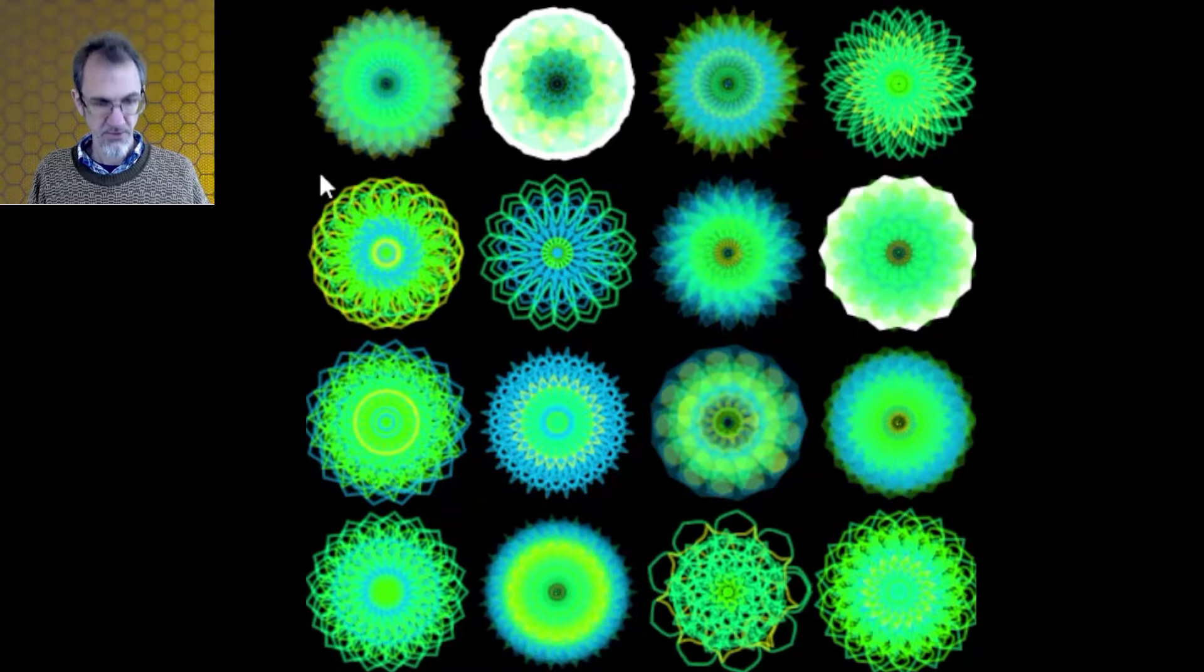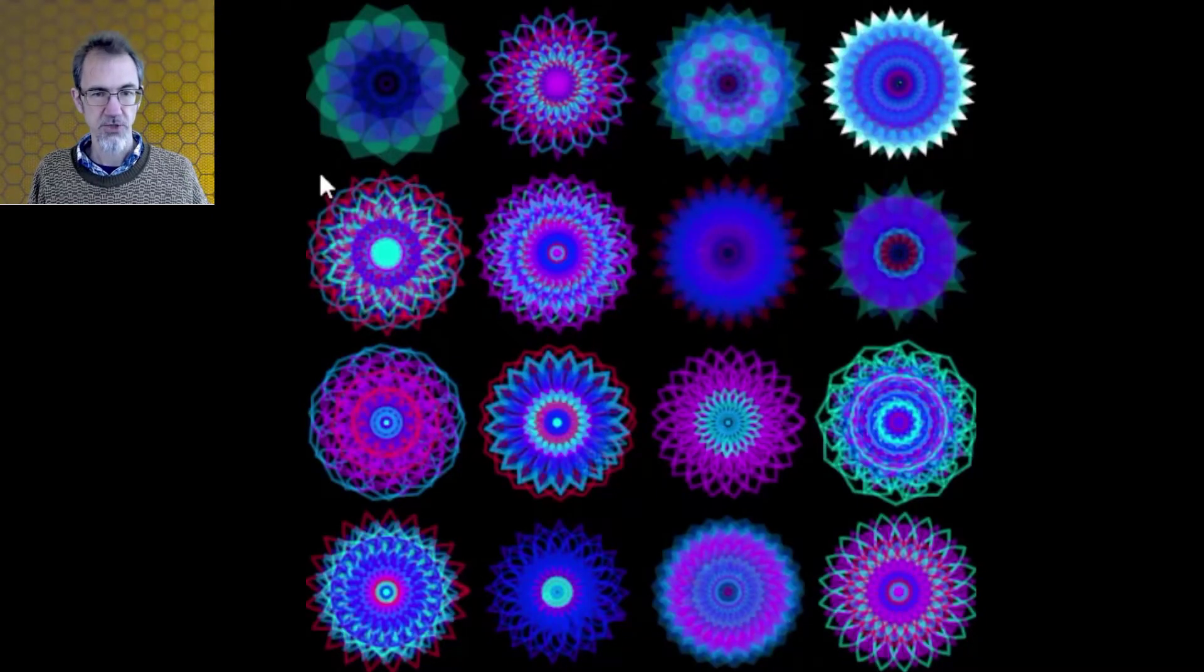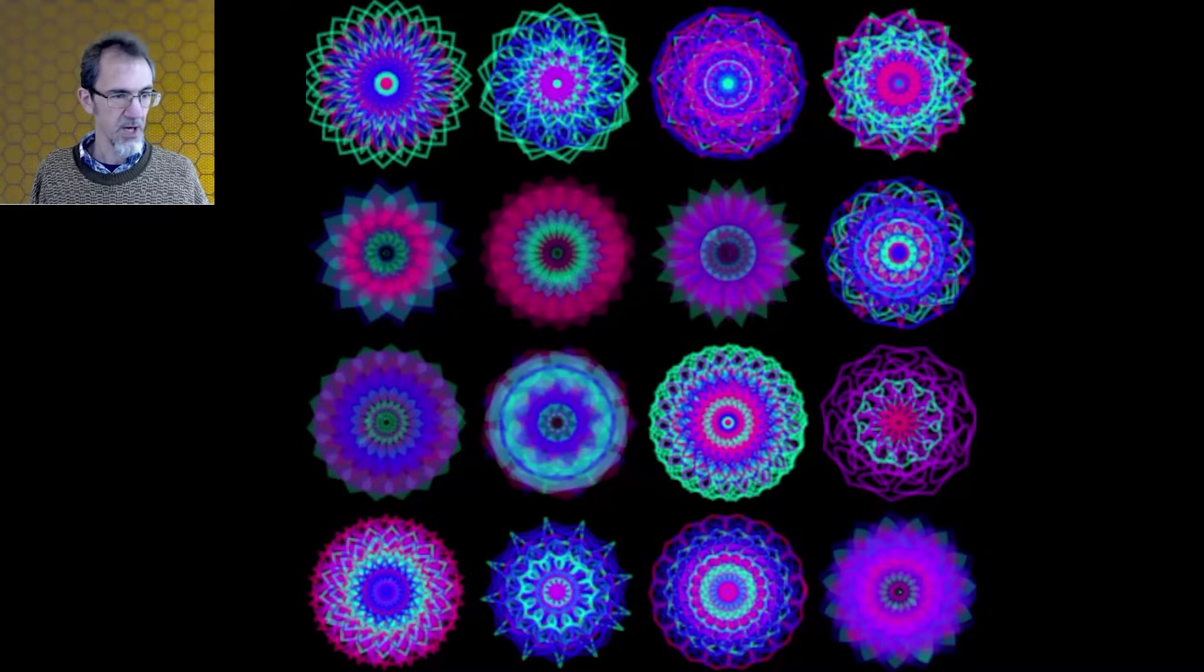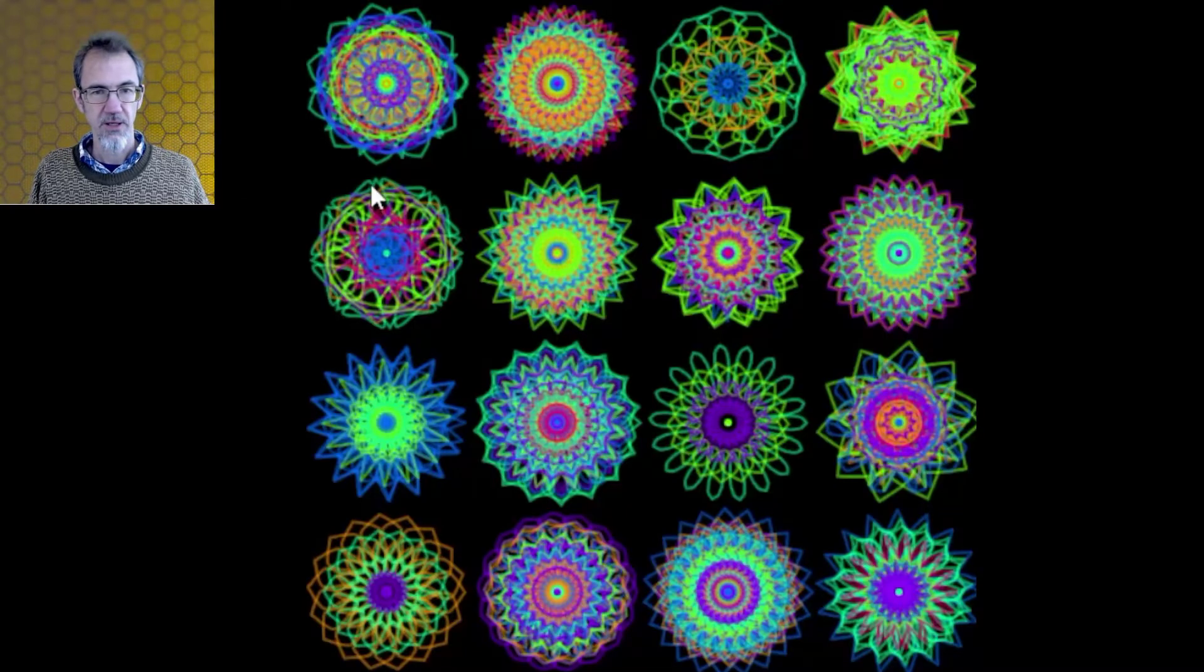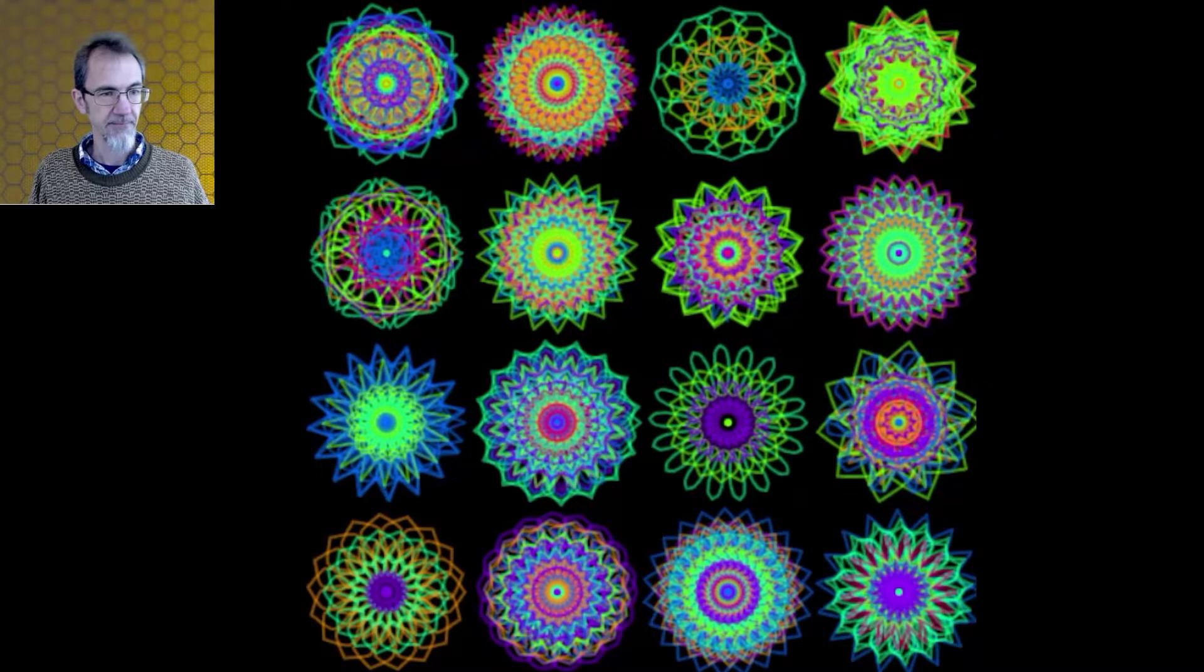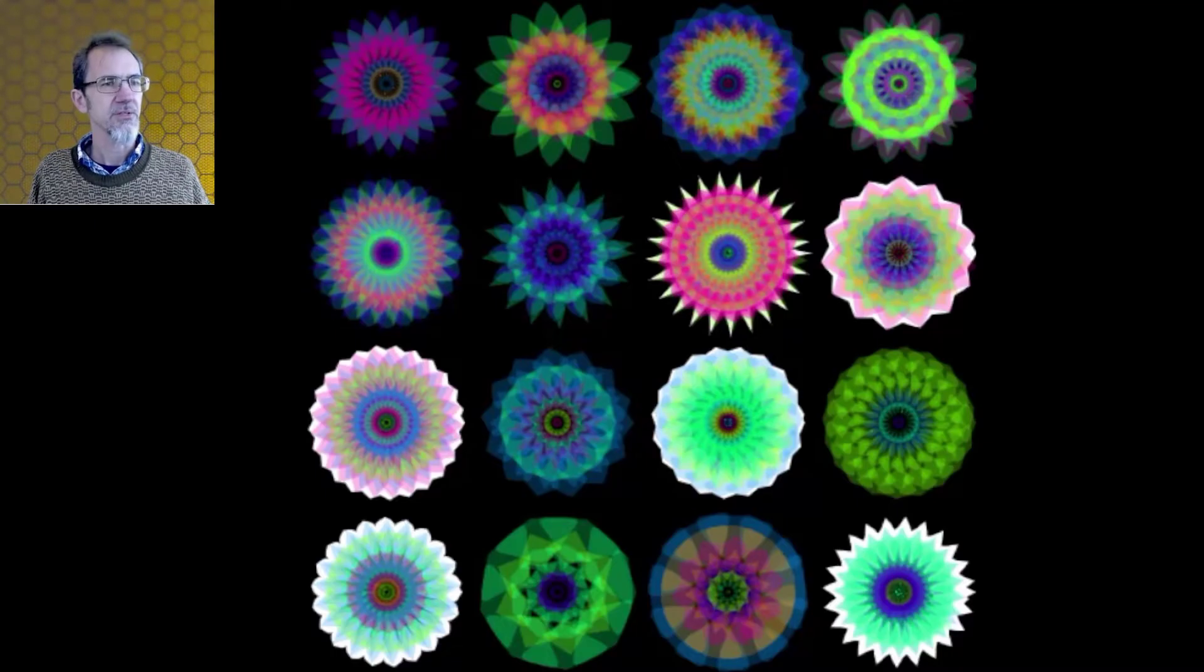And then there's also, you can do a mix of fill and lines as well. Although I don't care for this one as much. I think it's better if you do the lines or the fill. And we could increase the color range to 360 if you want to get all the colors like that. Go back to fill. So this is another one. That's my mandala many lines option. I call this.